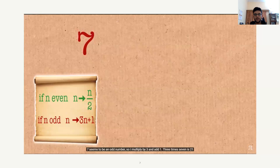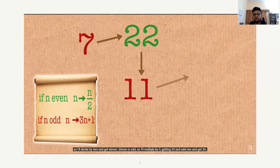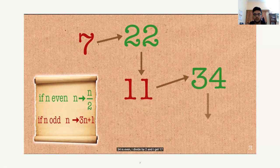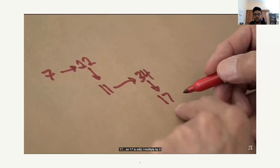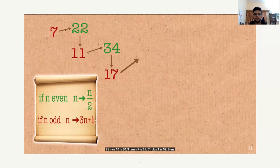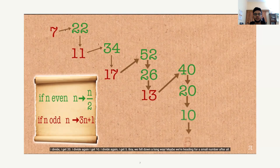22 is even, so divide by 2 to get 11. 11 is odd: multiply by 3 to get 33, add 1 to get 34. 34 is even: divide by 2 to get 17. 17 is odd: 3 times 17 is 51, plus 1 is 52. 52 is even: divide to get 26, then 13. 13 is odd: multiply by 3 and add 1 to get 40. 40 is even: divide to get 20, then 10, then 5.